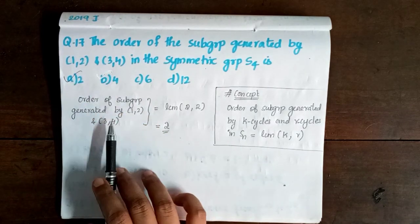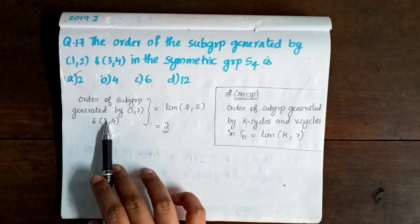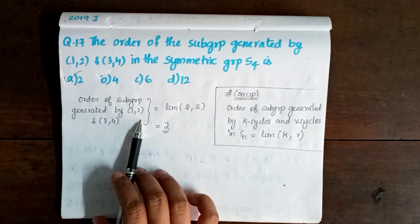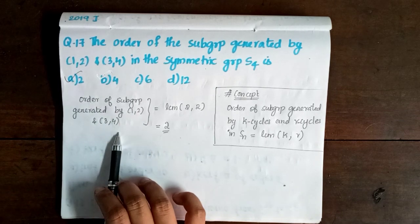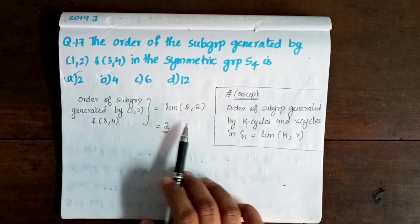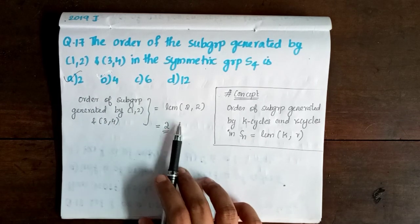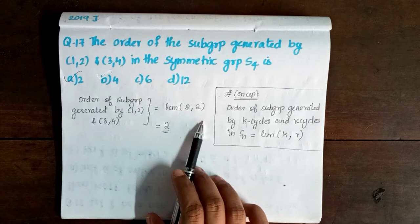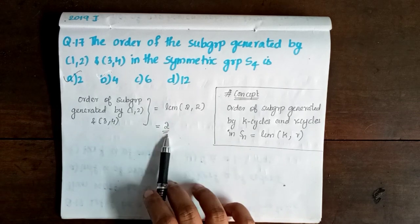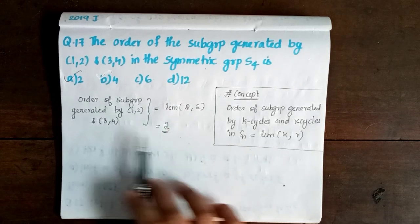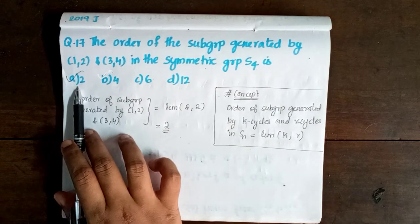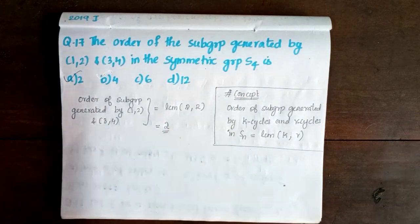Therefore, order of subgroup generated by (1,2) and (3,4) is LCM of 2 and 2, that is equal to 2. So option A is correct.